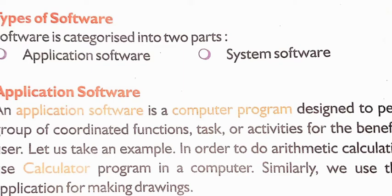For example, in order to do arithmetic calculations we use the calculator program in a computer. Similarly, we use the paint application for making drawings. So calculator is an example of application software and paint is an example of application software. There are different types of application software that help us in doing certain types of jobs.